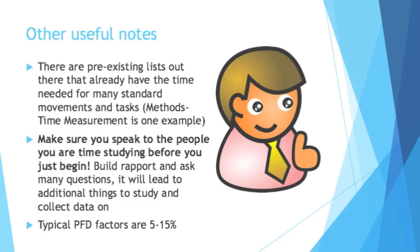Here are some other useful notes. You might wonder if someone has already done this timing before — possibly yes, someone at your own company might have, so check to see if that information exists. But if not, there are actually general standards in place. One is called Methods Time Measurement, for example. There are many different standards, and a lot of companies have their own — a reach should take this long per foot, or assembling this type of screw to this type of hole should take this long. There's a lot of that out there.